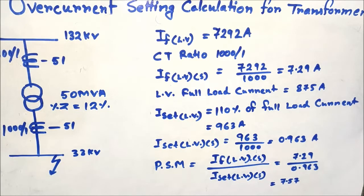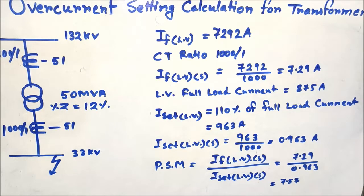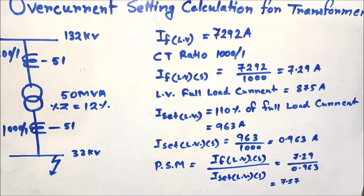The fault current close to the 33kV bus on the LV side is 7292 amperes, or 7.29 kilo-amperes. The CT ratio on the LV side of the transformer is 1000/1. This fault current reflected to the secondary side of the CT is 7292 divided by 1000, which equals 7.29 amperes. This fault current will be sensed by the overcurrent relay connected on the secondary side of the LV CT.